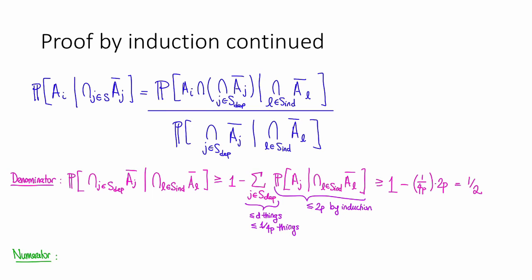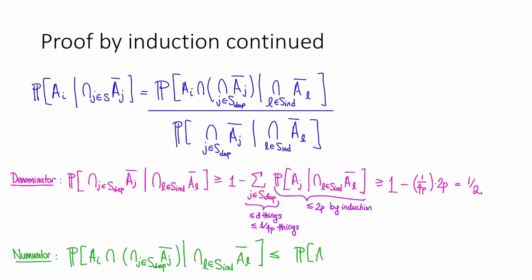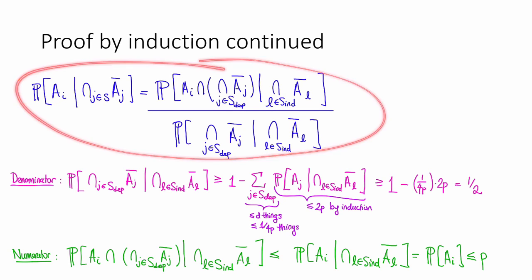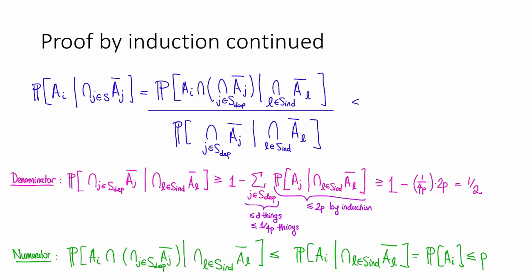Now let's bound the numerator. The probability that ai and none of the aj hold for j in S_dep, conditioned on none of the al holding for l in S_ind, is at most the probability of ai conditioned on all that same stuff — since dropping the extra term can only increase the probability. Using the fact that all events in S_ind are independent of ai, this equals the probability that ai occurs, which by assumption is at most p. Therefore, coming back to our expression, we've bounded it as at most p divided by 1/2, which equals 2p. That establishes the inductive hypothesis for the next round.